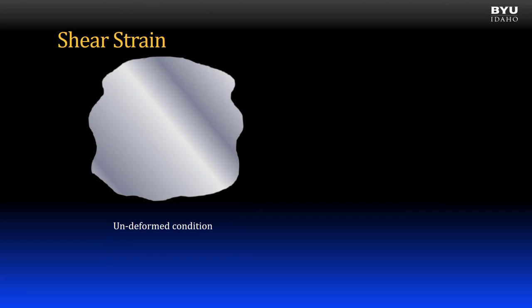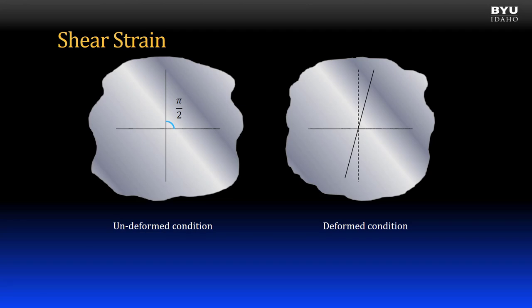Next, shear strain. Suppose we draw two orthogonal lines on a body, forming a 90-degree (π/2 radian) angle. When shear forces are applied, the body deforms and the angle between those lines changes to theta-prime. The average shear strain gamma equals π/2 minus theta-prime — in other words, the change in the angle. Units are radians.